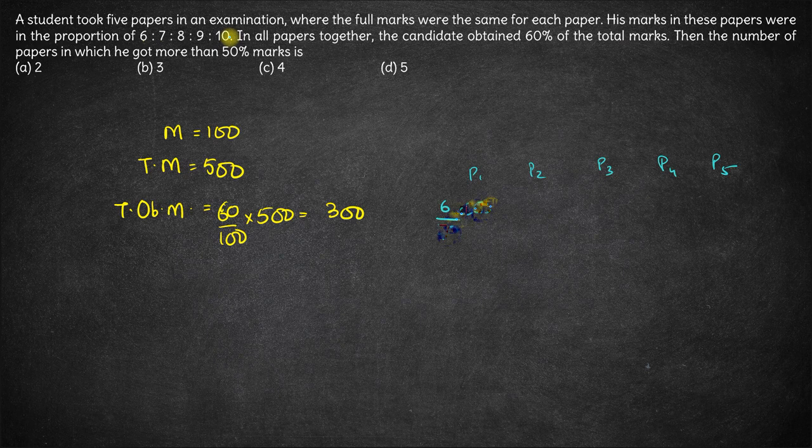So 6 by 40 into 300 marks is what he got in the first paper. So this becomes 3 by 2 and 50 by 2 is 15. So 3 into 15 is 45 marks.